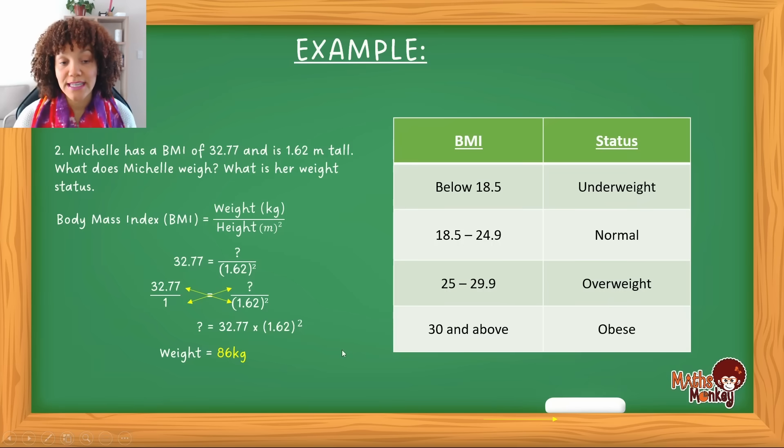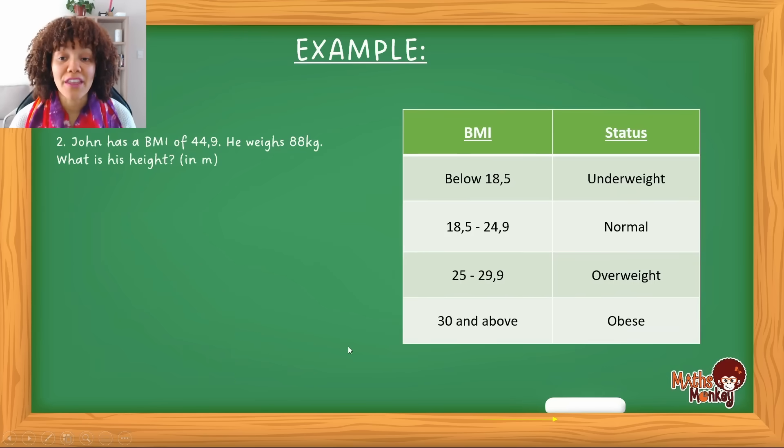So again, did you see in the first example now, they give you the weight and they give you the height and you must calculate the BMI. In this question, they give you the BMI and they give you the height and you have to calculate the weight. So I'm sure you can imagine what the third example would be, is where they're giving you the BMI and the weight and you must calculate the height. So let's look at this question.